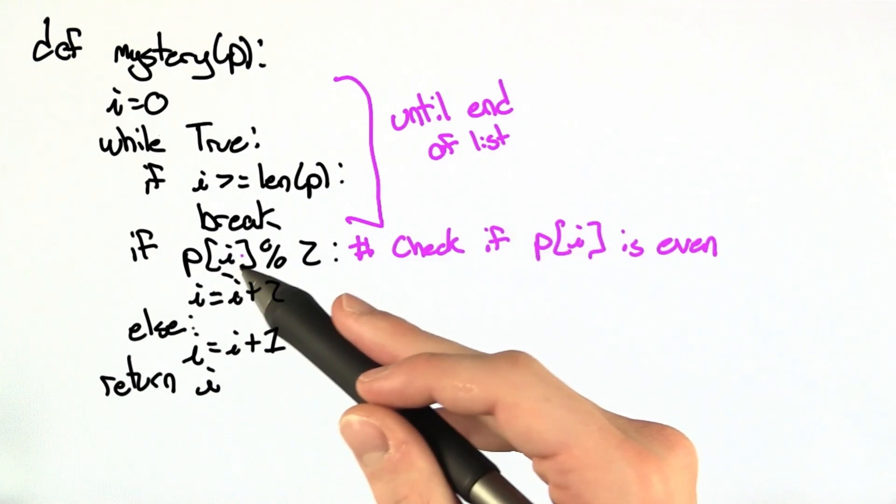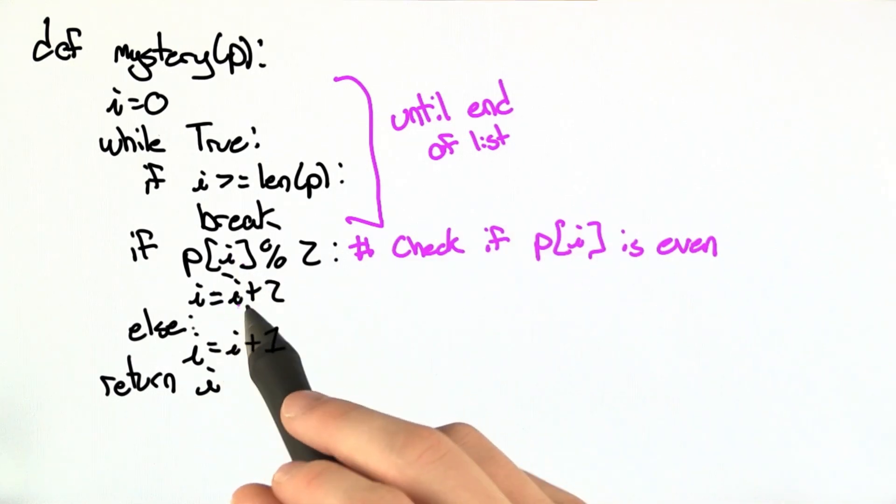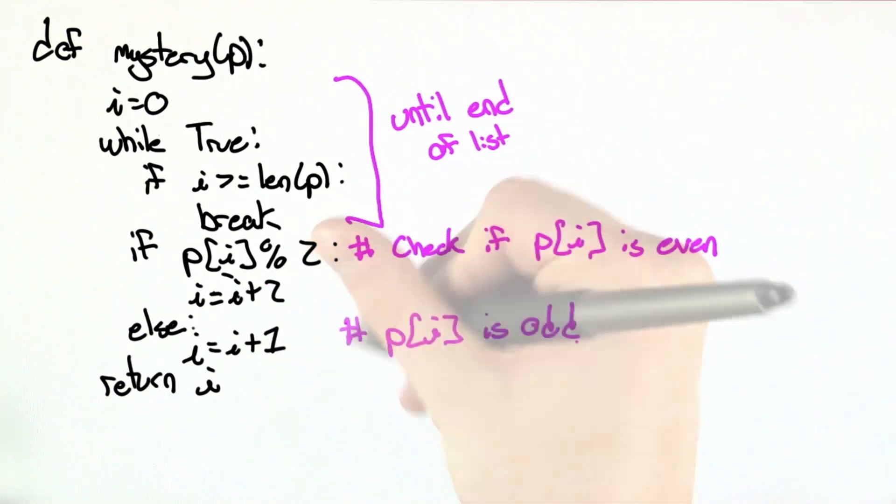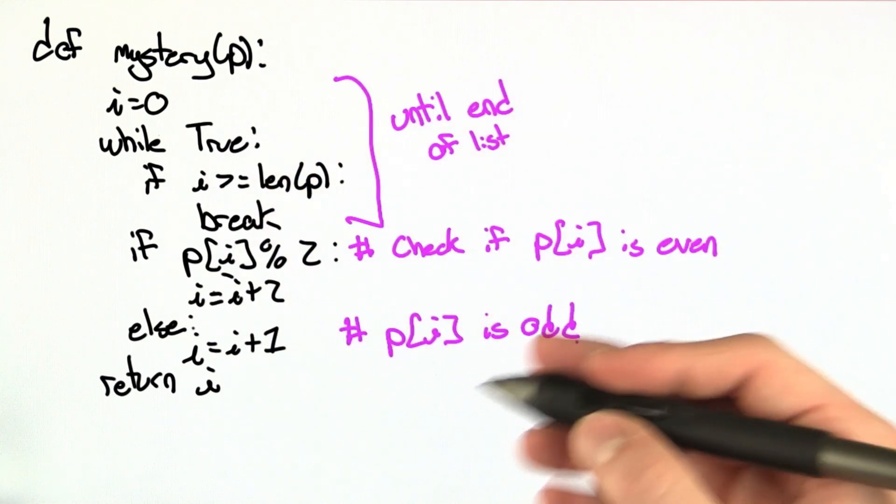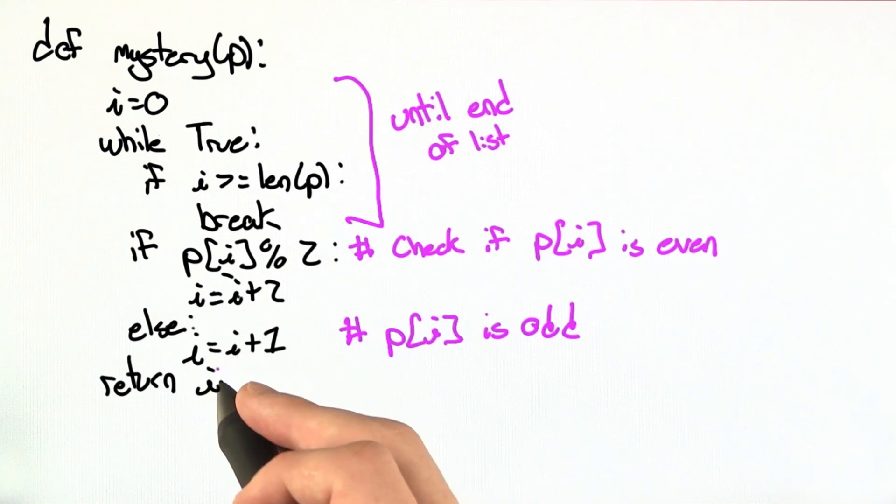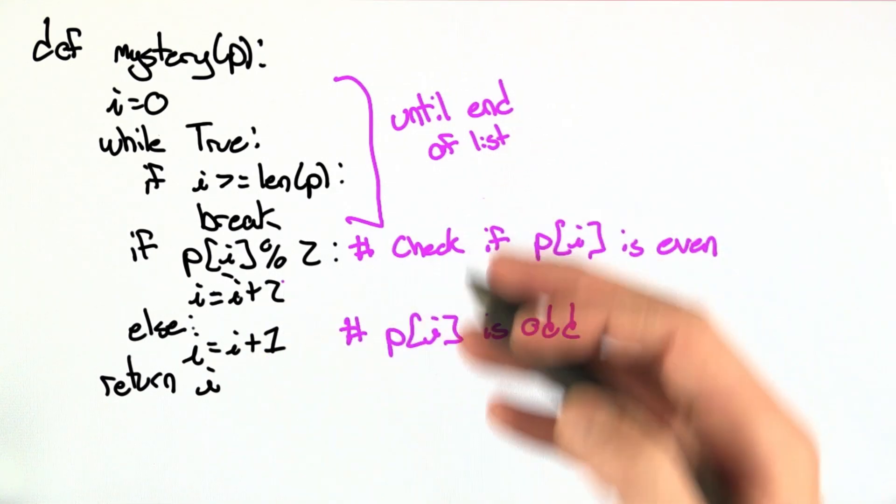If the element in p at index i is even, we're going to increment i by 2. Otherwise, we're going to increment it by 1. So the worst case for this function, in terms of runtime, is if every element in p is odd. Meaning, we only increment i by 1 for each iteration. So we're going to go at half the speed that we would if every element in p was even.